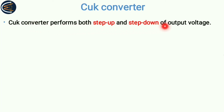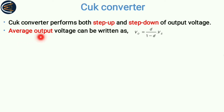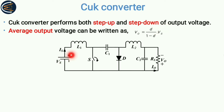The Ćuk converter performs both step-up and step-down of output voltage, like a buck-boost converter. The expression for average output voltage is the same as the buck-boost converter, where Vis is the input supply voltage and VO is the output voltage, and D is the duty ratio. If D is less than 0.5, it behaves as a step-down converter; if D is greater than 0.5, it behaves as a step-up converter.